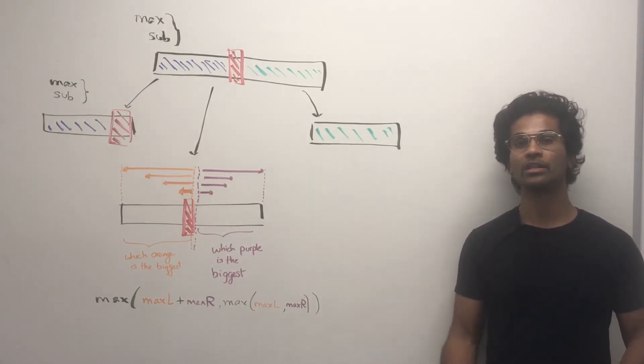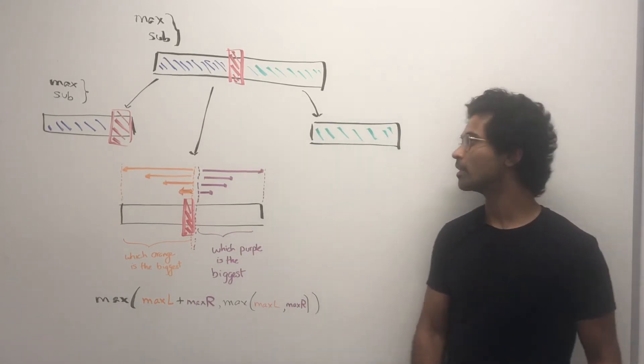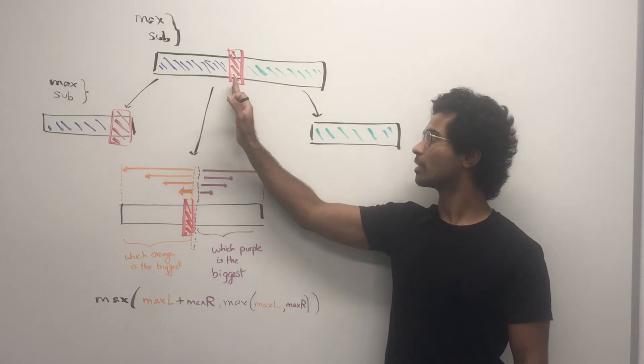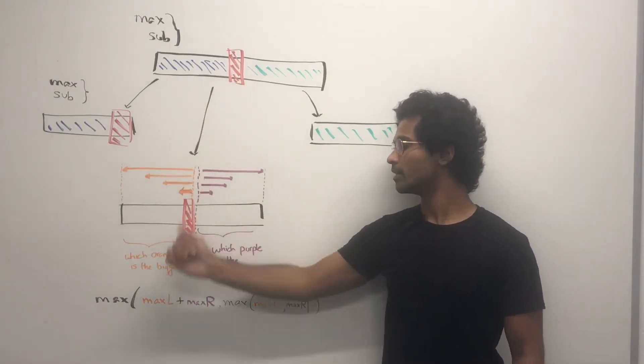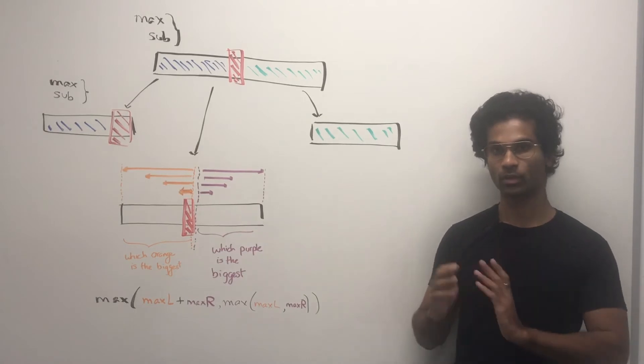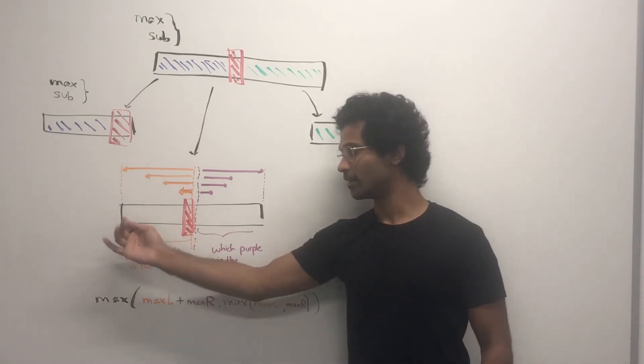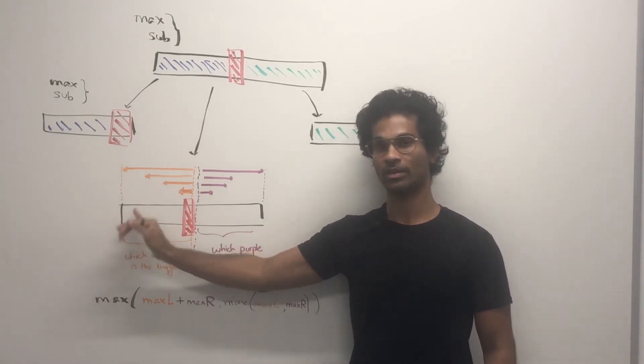So how do we take care of this cross intersection space? What we do for this problem is we take the original array and we use a for loop, one for the left side and one for the right side, and we calculate. So for the left side, we're going to include the red and everything to the left all the way till the number that's at the very end.